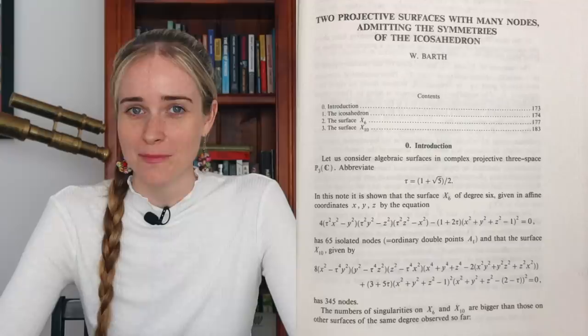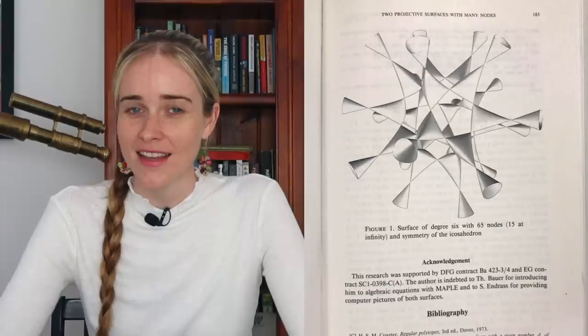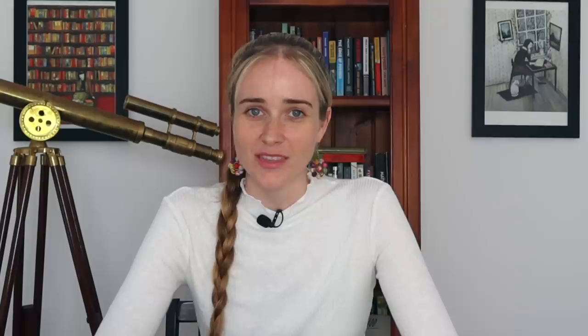They're wrong because the bath sextic published in 1996, 16 years after the second paper actually has 65 singularities.